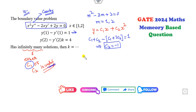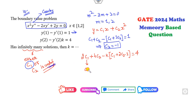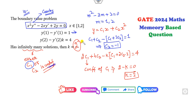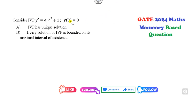Applying the second condition y(2): 2c₁ + 4c₂, minus k times the derivative plus the remaining terms equals 4. Since c₁ is undefined, its coefficient must be zero. The coefficient of c₁ gives 2 − k = 0, so k = 2. That is the right answer to this problem.